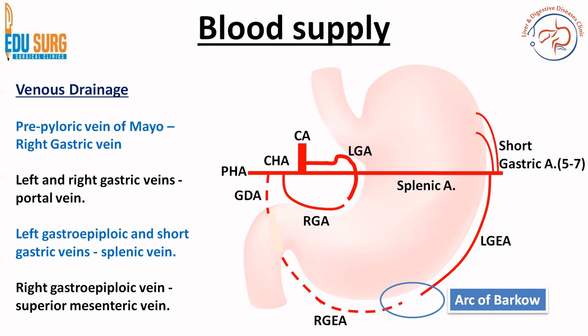So that is the arterial and venous drainage. The pre-pyloric vein of Mayo and the arc of Barkow are very commonly asked questions.